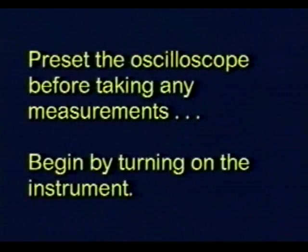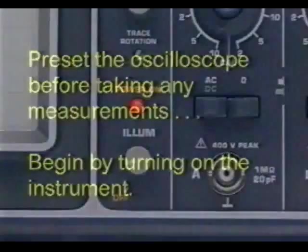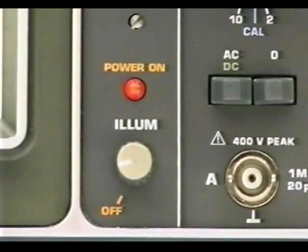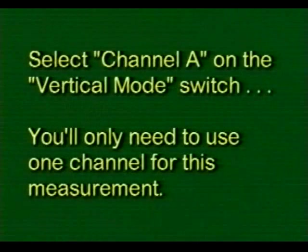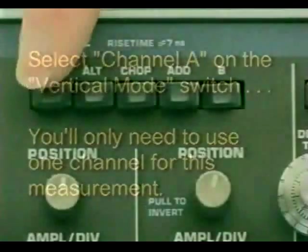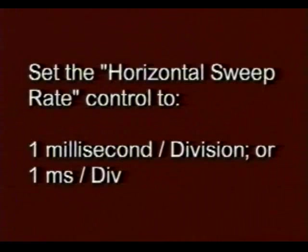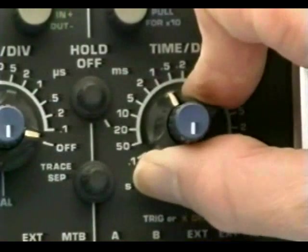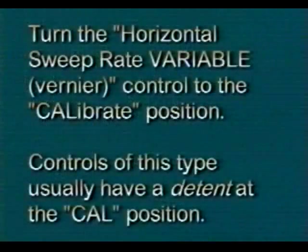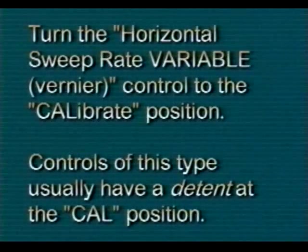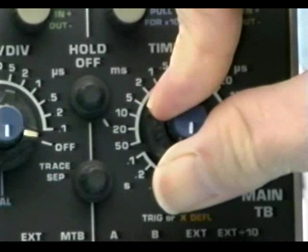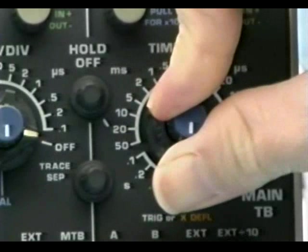Before we actually start taking any measurements, it's best to preset the oscilloscope controls. This is where it's important to have the oscilloscope operating manual handy. We'll begin by powering up the instrument. Begin by selecting channel A on the vertical mode switch. Set the horizontal sweep rate control to 1 millisecond per division. Don't forget to turn the horizontal sweep rate variable vernier control to the calibrate position. Controls of this type usually have a detent at the cal position with an identifiable click sound when you reach this position.